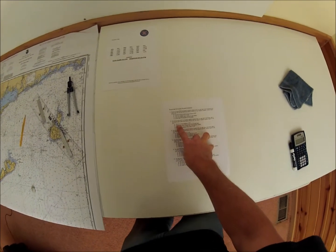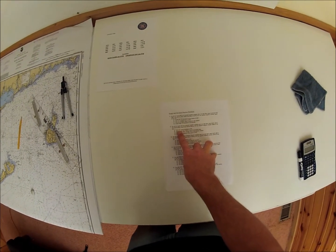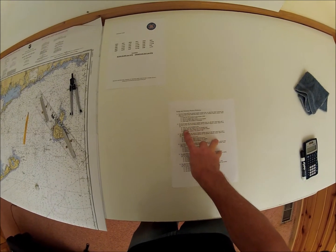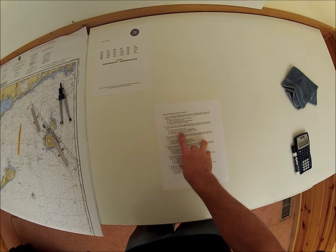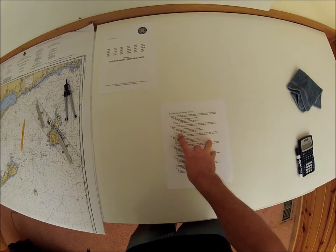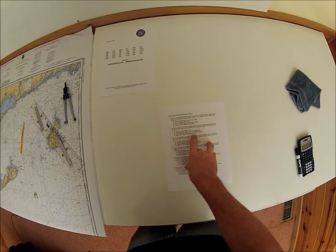I'm going to read down the answers here. You know the correct deviation is 3 west, should swing your vessel to check the deviation table, should apply 15 west compass error to all compass readings if you know you are steering a true course of 185.